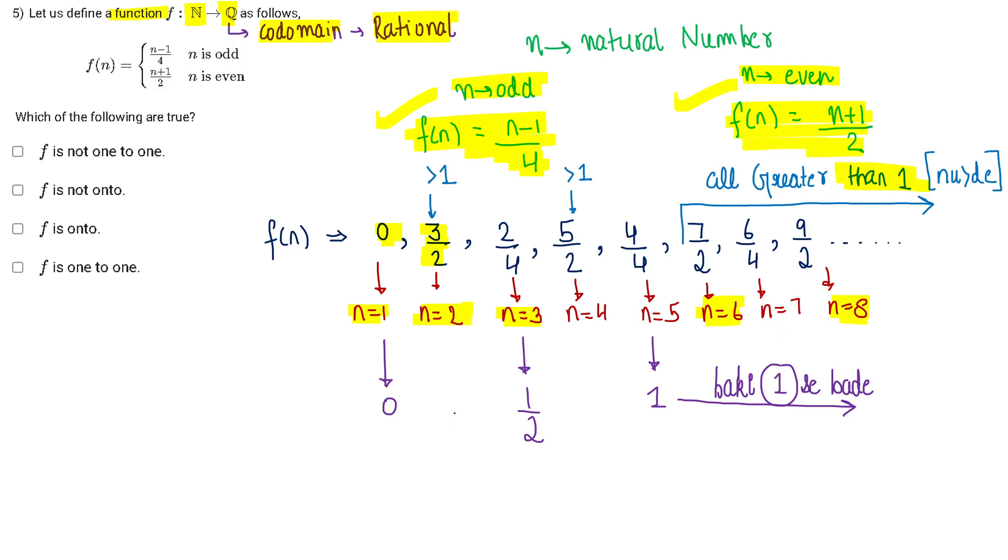So function values are 0, 1/2 and 1. After that all function values are greater than 1. I hope this is clear now by analyzing the function. So we understand one thing.